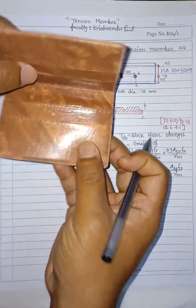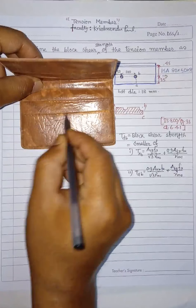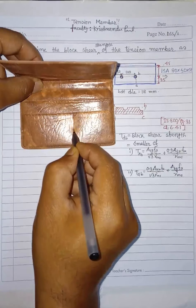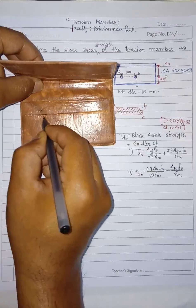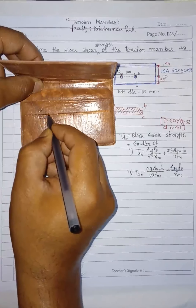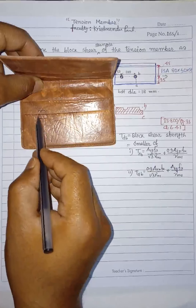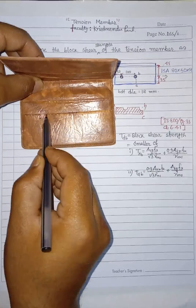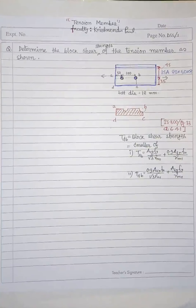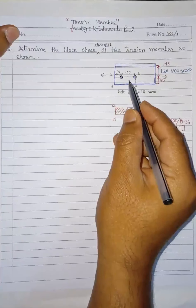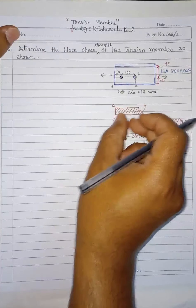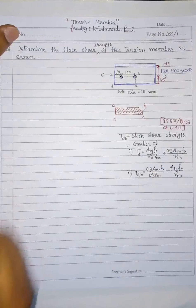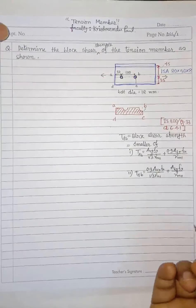So if there is a bolt here and here, the failure will go in this direction — coming to this path. The block shear line passes towards the center line of the hole. The block will come out from the angle section like this, and you have to find the block shear strength of this angle section.